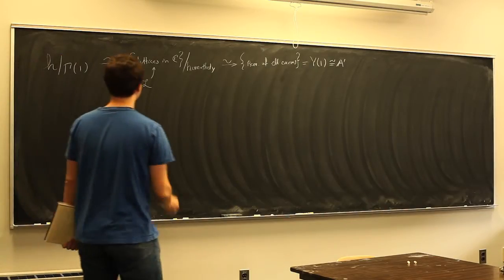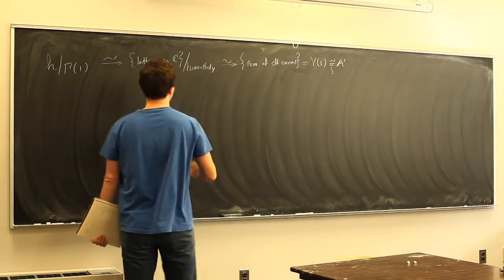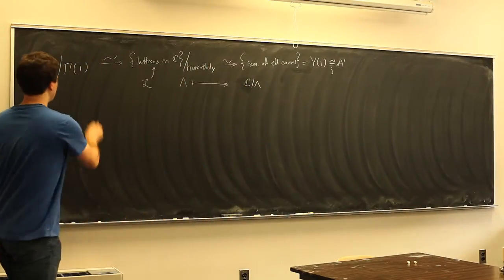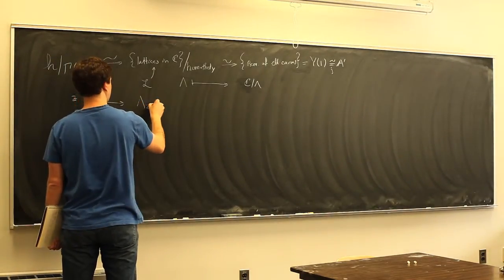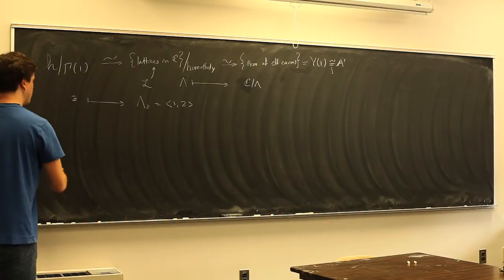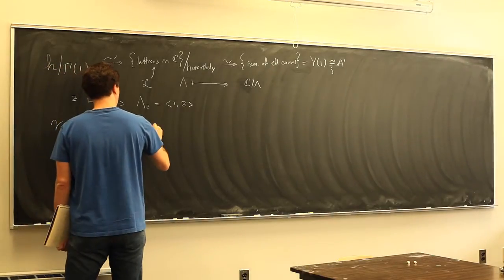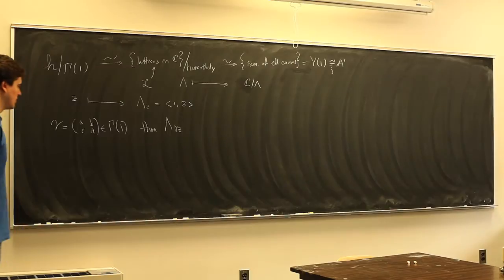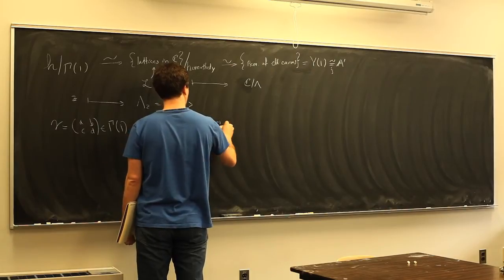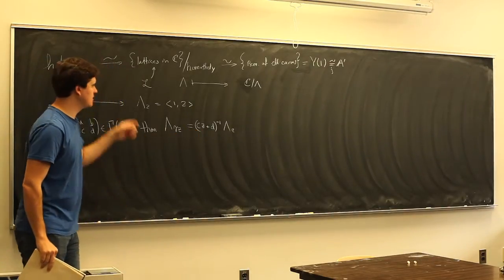Let me recall how some of these maps went. This isomorphism is the J-invariant; this one is a definition. This one takes a lattice Λ to the elliptic curve ℂ/Λ. And this one takes a point z in the upper half plane to the lattice Λ_z generated by 1 and z. If γ = (a b; c d) ∈ SL₂(ℤ), then Λ_{γz} = (cz+d)⁻¹ Λ_z, which shows that two points in the same SL₂(ℤ)-orbit give homothetic lattices, making the map well-defined.